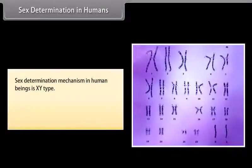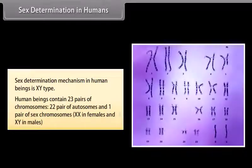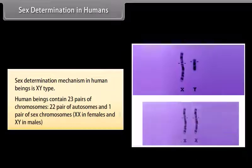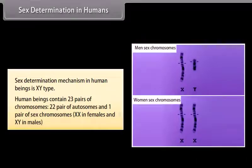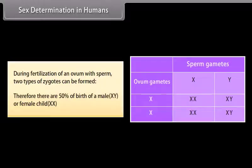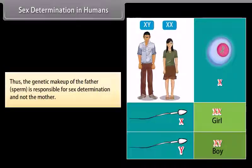Sex determination in humans follows the XY type. Human beings contain 23 pairs of chromosomes: 22 pairs of autosomes and one pair of sex chromosomes — XX in females and XY in males. During fertilization of an ovum with sperm, two types of zygotes can be formed, giving 50% chance of a male (XY) or female (XX) child. Thus, the genetic makeup of the father's sperm is responsible for sex determination, and not the mother.